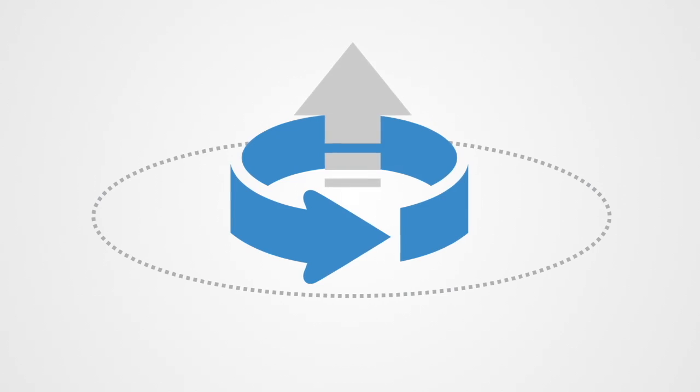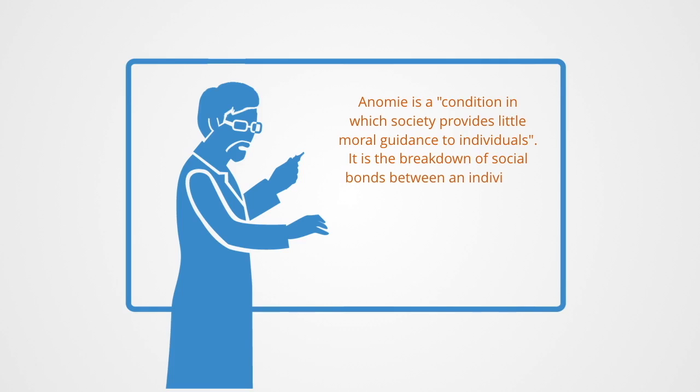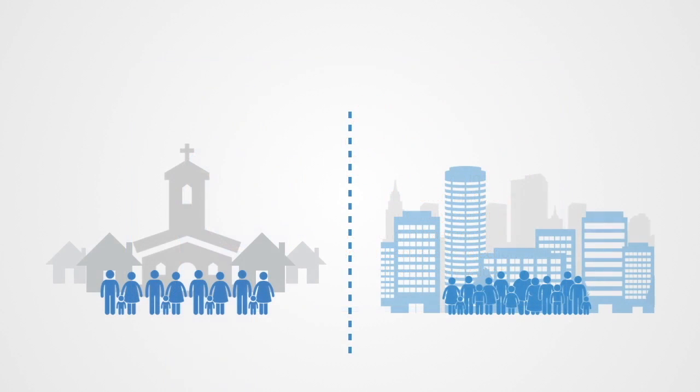As an example of entropy, we could think about anomie. Anomie is a condition in which society provides little moral guidance to individuals. It is the breakdown of social bonds between an individual and the community, resulting in fragmentation of social identity and rejection of self-regulatory values that maintain order.